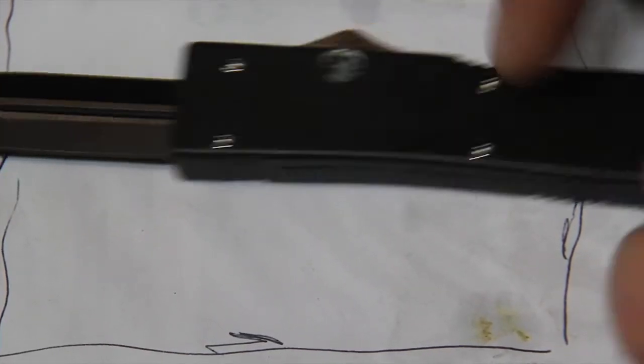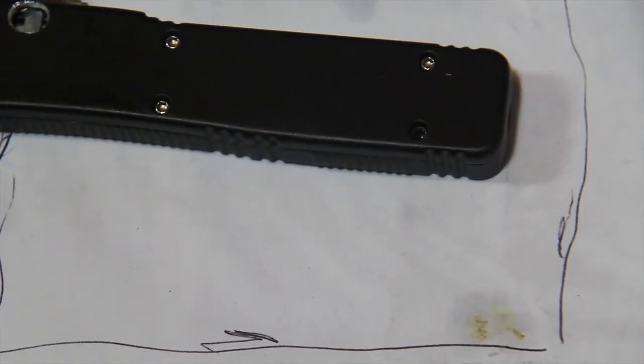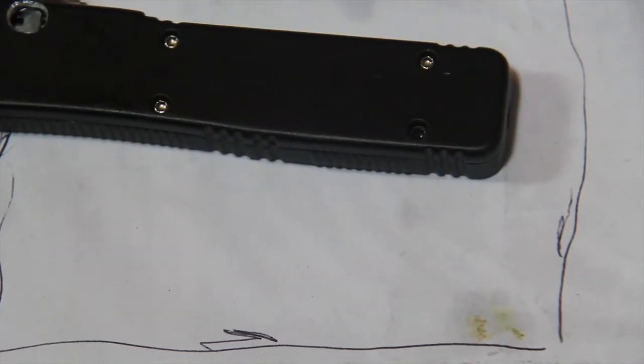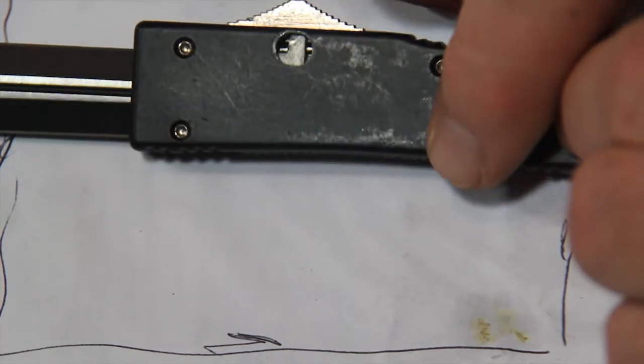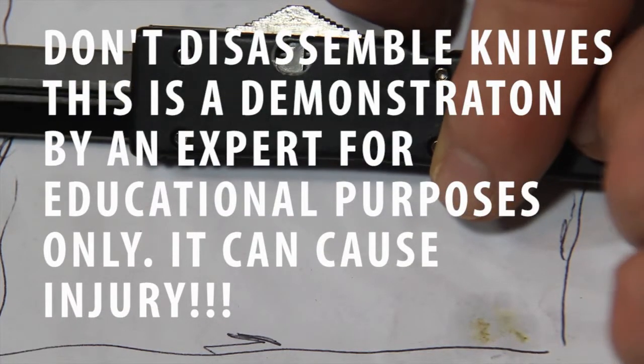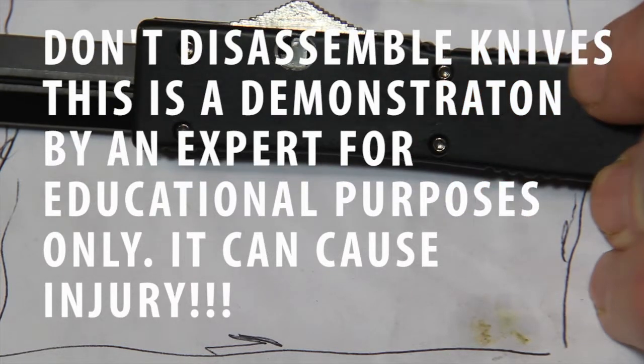Okay, got it all put together. Lost a screw. This is why you should not take knives apart. You'll lose parts and it'll never work again. Another example. But this is for science.